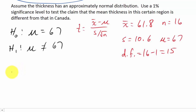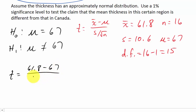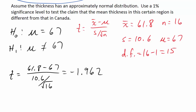Now we calculate t: t = (x̄ − μ) / (s / √n) = (61.8 − 67) / (10.6 / √16). After computing this, we get t = −1.9622. This is our test statistic.